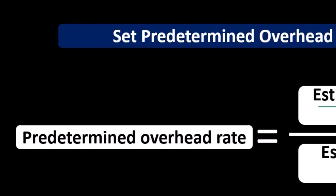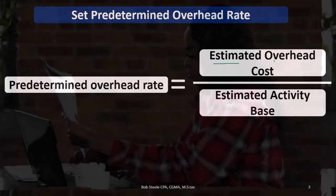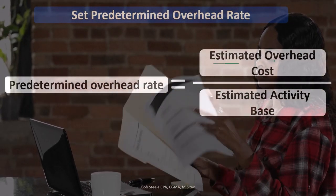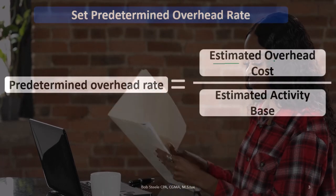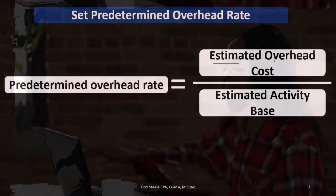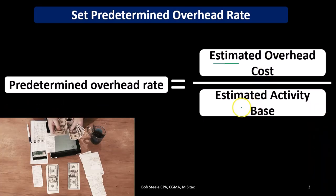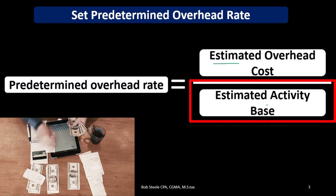We'll add up all the items that went into overhead last month — indirect labor, indirect materials, and everything else — and then adjust for what we expect will be different this month to come up with our estimated overhead. Then we divide by the estimated activity base. So what is an estimated activity base?